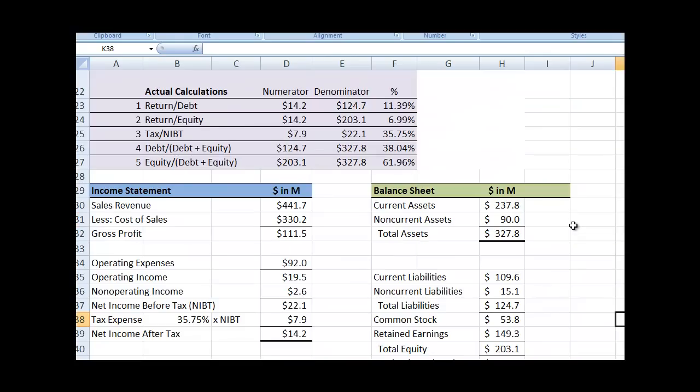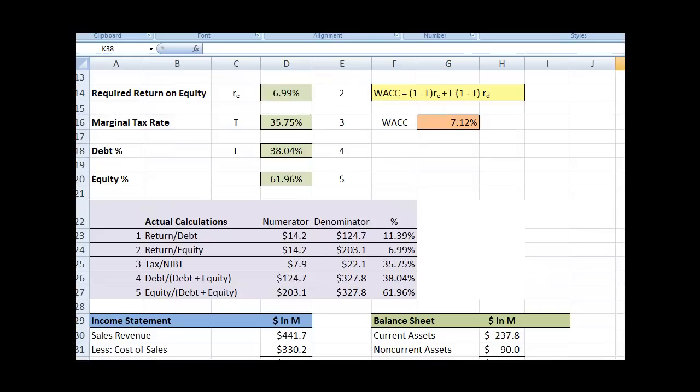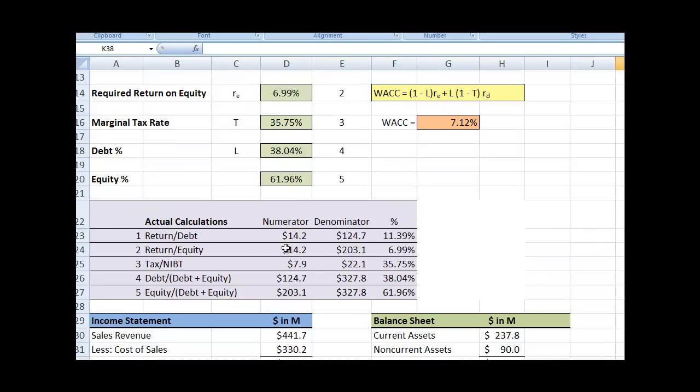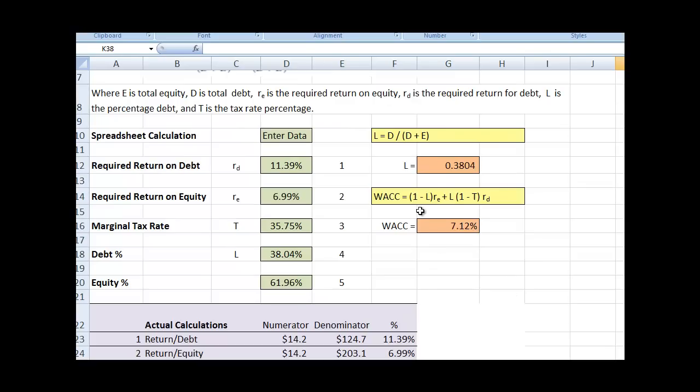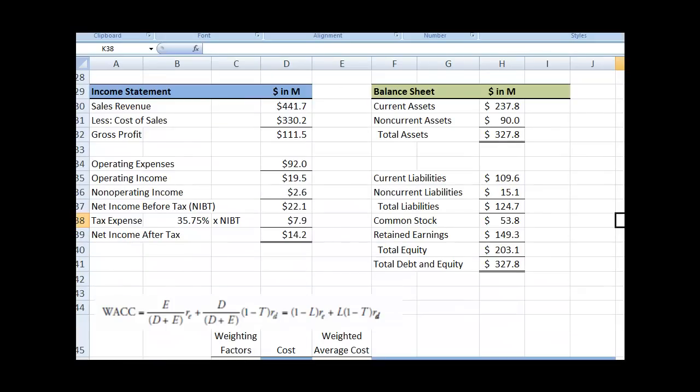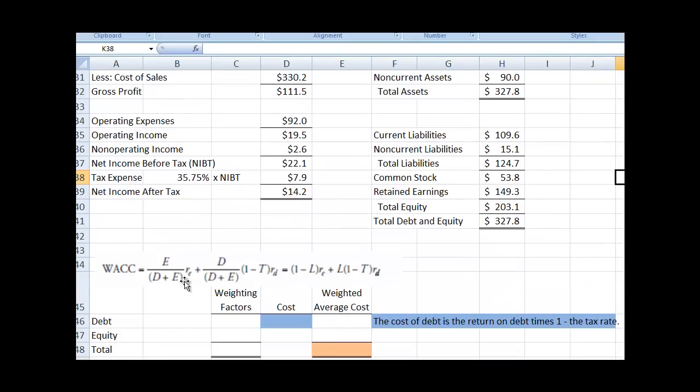Okay, so if you recall, last time we got this information about Daktronics and we put it in an income statement and balance sheet. And then we calculated what these five things were so that we could calculate this formula. And now we're going to break it down. I just moved the formula down so you can see the formula as we're doing it.